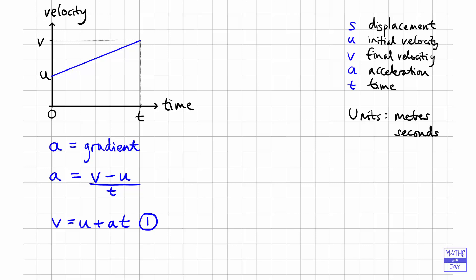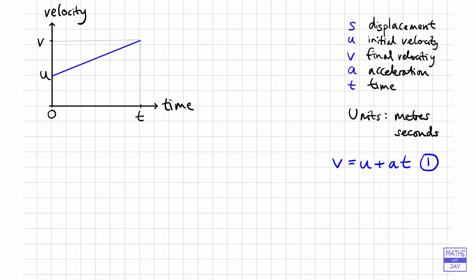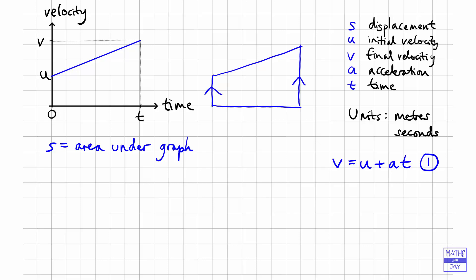Now, still using the same graph, we look at the area under the graph to give us the displacement. The shape is a trapezium: the horizontal distance between the two parallel lines is T, the height of the shorter line is U, and the height of the longer line is V. The formula for the area of a trapezium is half the sum of the parallel sides, so U plus V, multiplied by the distance between them, T. This gives us our second equation: S equals one half times (U plus V) times T.